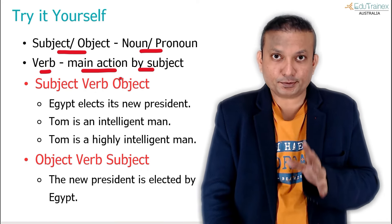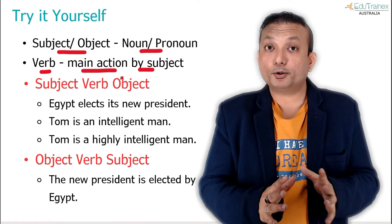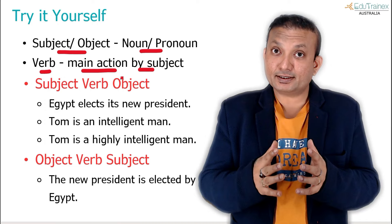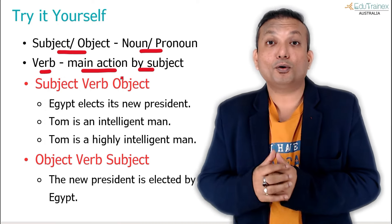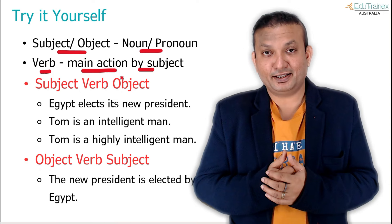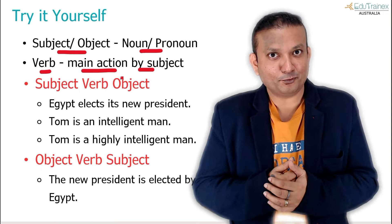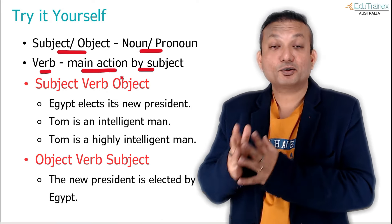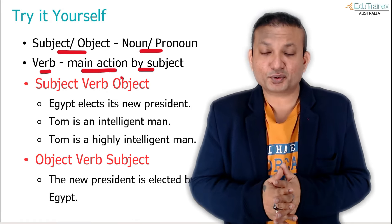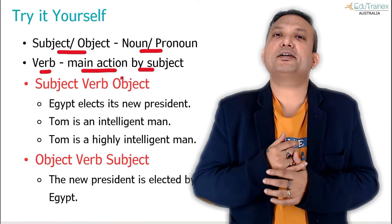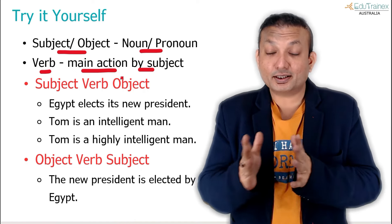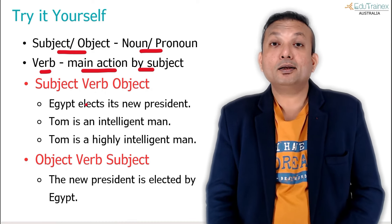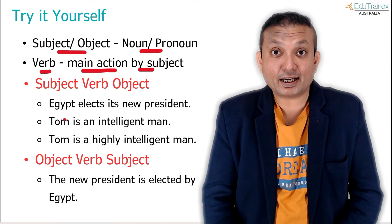Always choose the main verb being done by the subject. There could be multiple verbs — for example, 'The scientist who lives on Bridge Road works in a company.' Which is the main verb — 'lives' or 'works'? Our focus is on the scientist working in a company, not living on some street — that's just additional information about the subject. It's a little bit tricky but with practice it will become perfect. Let's look at more examples before we dive into the exam questions.